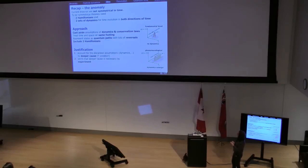Just to recap, current theories are not symmetrical in time because they have one set of dynamics and one time direction. The universe can't decide on which direction in time to take. It's got no reference for that. You can't just go in one direction of time. It's got to be symmetrical. So something is wrong there.